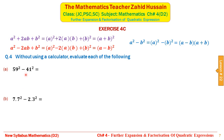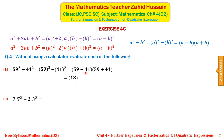Question 4 involves numbers — evaluate each of the following without using a calculator. The expression 59² − 41² is of the type a² − b². Here a = 59 and b = 41, so this equals (59 − 41)(59 + 41). Evaluating: 59 − 41 = 18, and 59 + 41 = 100, so 18 × 100 = 1800.